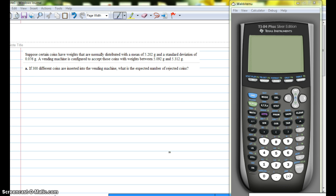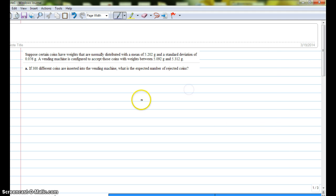Part A says, if 300 different coins are inserted into the vending machine, what is the expected number of rejected coins? So here we're talking about an expected number. Don't worry, I'll bring up the calculator when we need it.